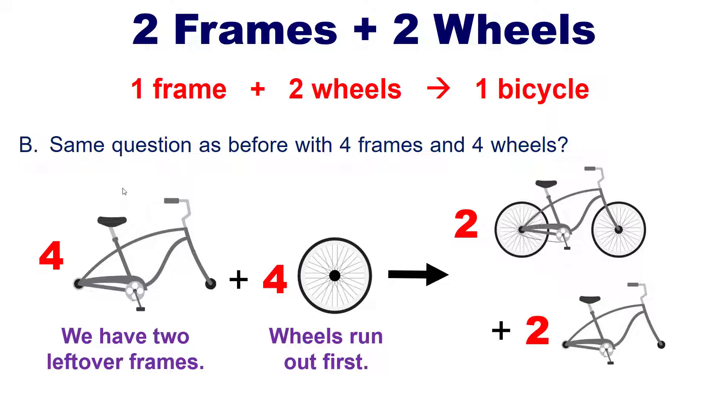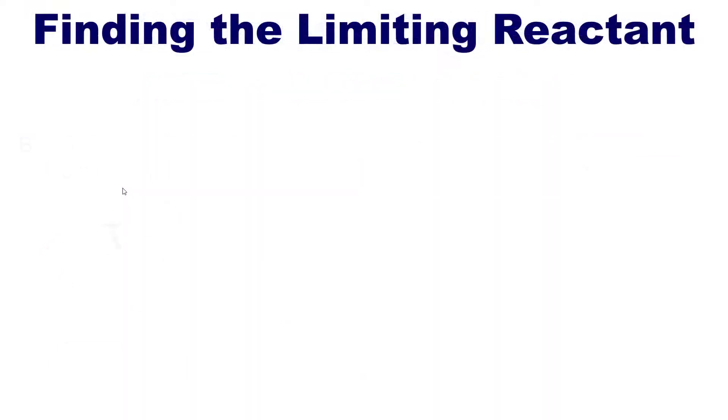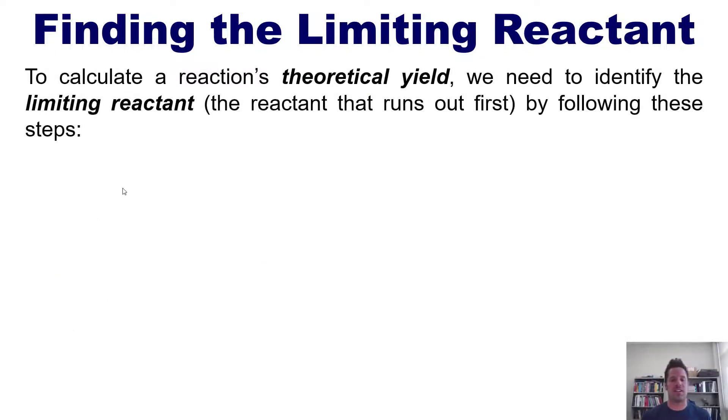I invite you then on your own to contemplate and answer the same question in two other scenarios. What if you had eight frames and 15 wheels? And what if you had 10 frames and 22 wheels? So my whole purpose in teaching you the principle of finding the limiting reactant is to help you understand how to calculate the theoretical yield. In other words, to calculate a reaction's theoretical yield, you have to identify the limiting reactant, the reactant that runs out first, because everything is determined by the limiting reactant.